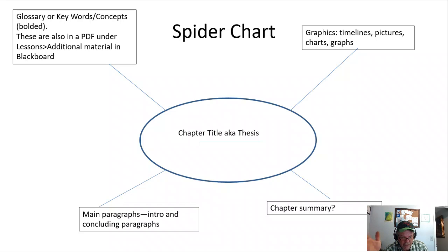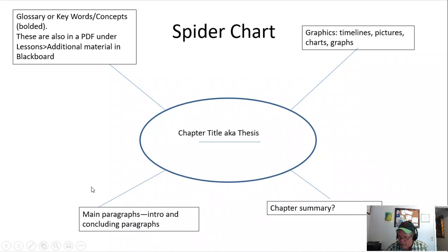So that's your spider chart. You can use it for outlining key ideas in a paper — the thesis, what am I writing about, and my main ideas one, two, three, maybe four with supporting information. For skimming a chapter, this works.